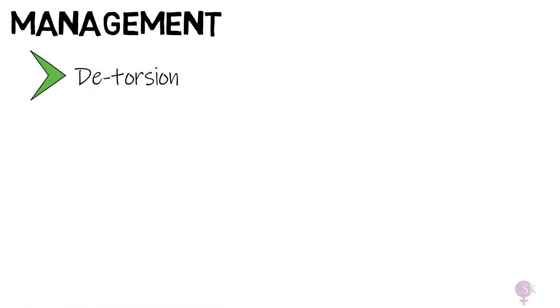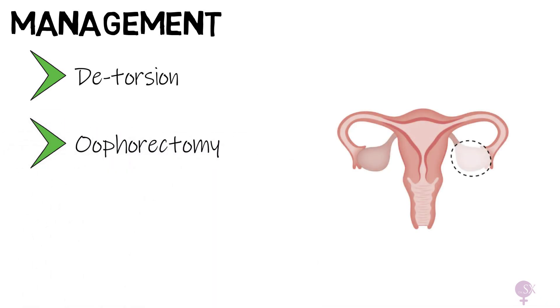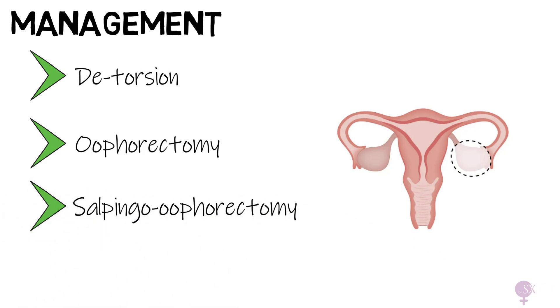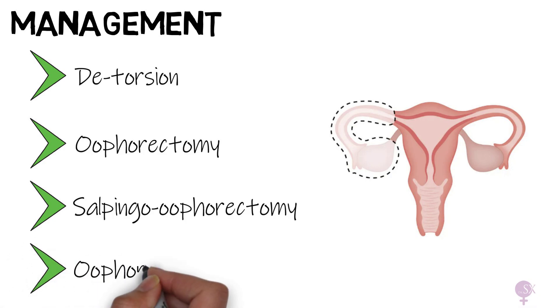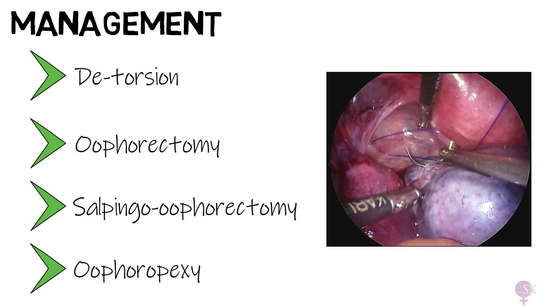In young women we try to opt for a conservative approach and merely detorse the ovary, which can only be done if minimal damage has occurred to the ovary and tube. If damaged, these should be removed either with an oophorectomy or a salpingo-oophorectomy. In cases of recurrent ovarian torsion we may opt to perform an oopexy, where we stitch the ovary to the pelvic sidewall or the back of the uterus, keeping it in place and preventing it from twisting again. In this image we can see a superficial bite taken from the pelvic sidewall and the ovary, which will be tied to keep the ovary in place.